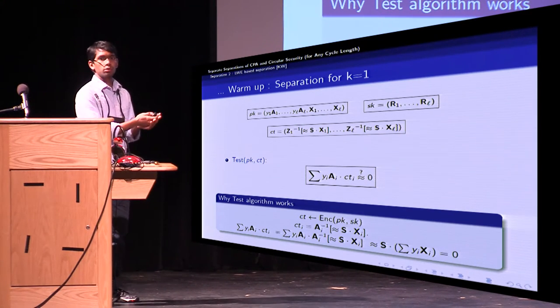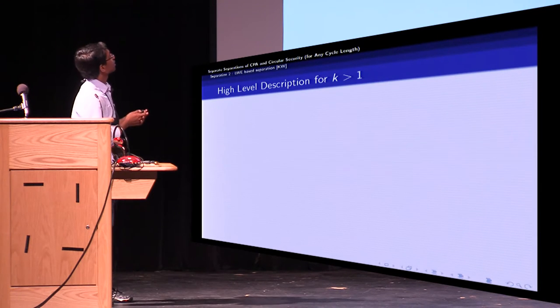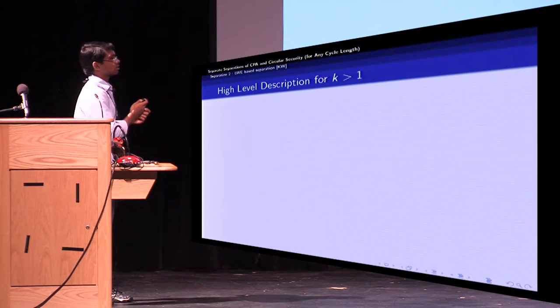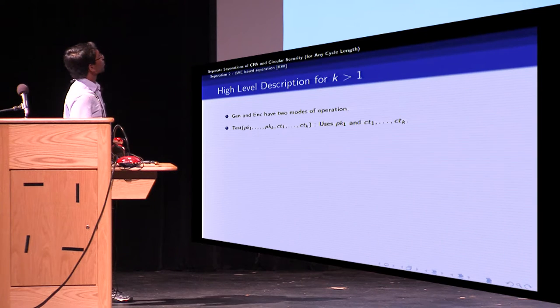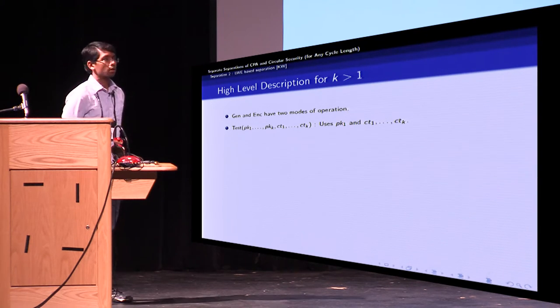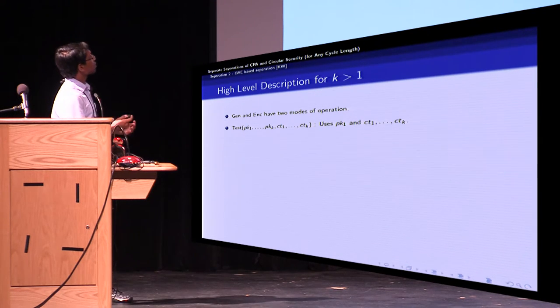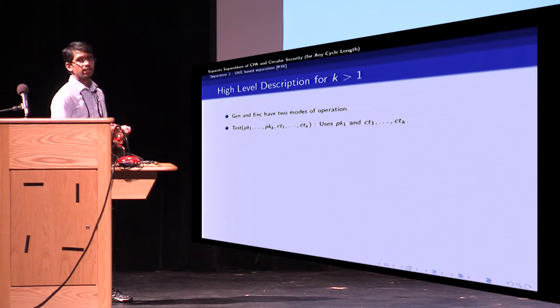So now how do we go from K equals one to K greater than one? So for this, we need to modify our construction. And for this, our scheme will have the keygen and the encryption algorithms will have two modes of operation. And the test algorithm will be using the first public key and the K ciphertexts.